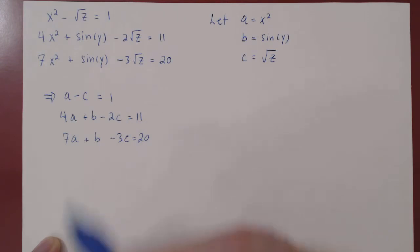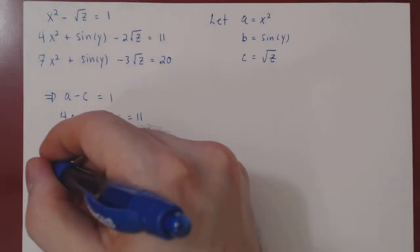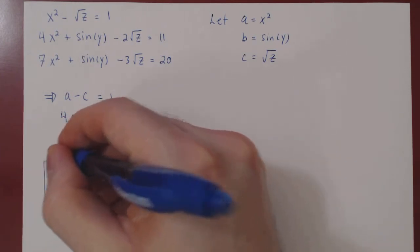And now the system is linear in the variables a, b, and c. So we can solve for this linear system using row reduction. As always, we first construct the corresponding augmented matrix.